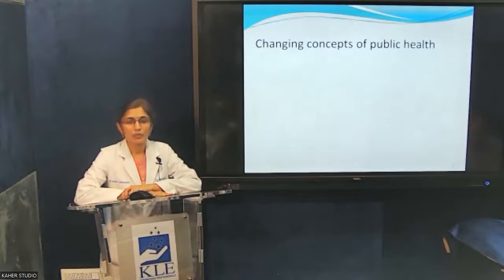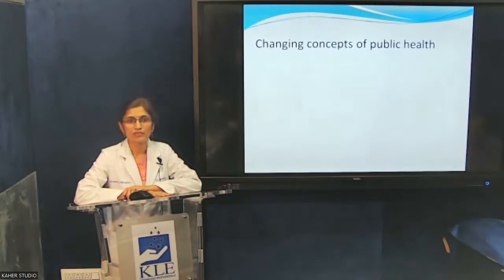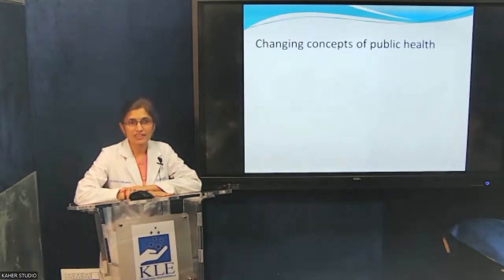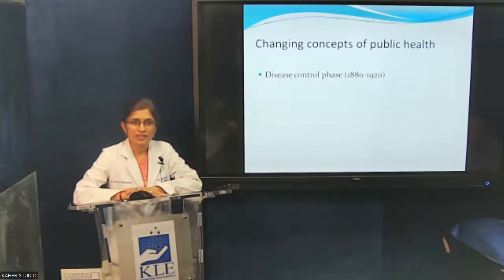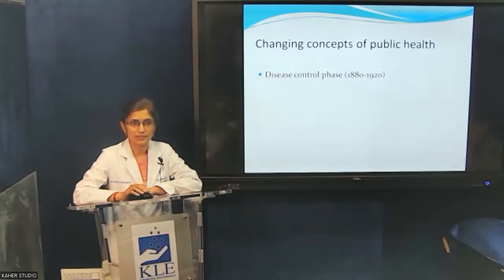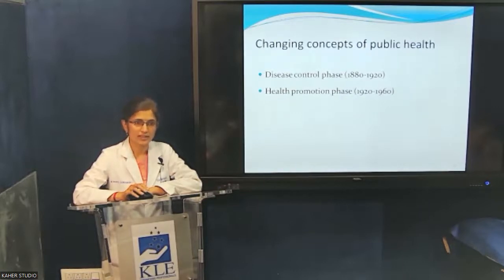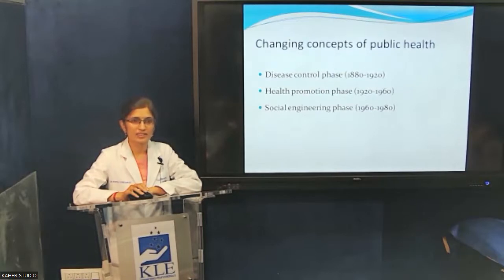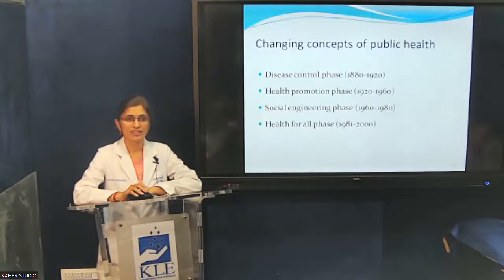When we talk about public health, it is essential that we are all aware of the changing concepts of public health. Looking back at history, there are four significant stages. First is the disease control phase, from 1880 to 1920. Next was the health promotion phase, from 1920 to 1960. Then the social engineering phase, from 1960 to 1980. And finally, the health for all phase, from 1981 to 2000.